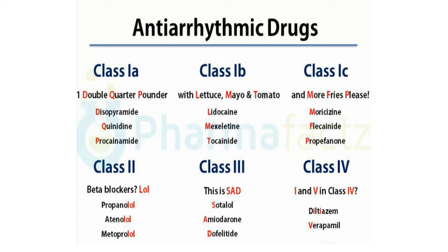Hello everybody! This video is a classification of anti-arrhythmic drugs and I'm going to follow the Singh-Vaughan-Williams classification. There are a couple of other classifications out there: one is the Sicilian Gambit classification, the other is the Oxford classification. But for this video, let's focus on Singh-Vaughan-Williams classification.